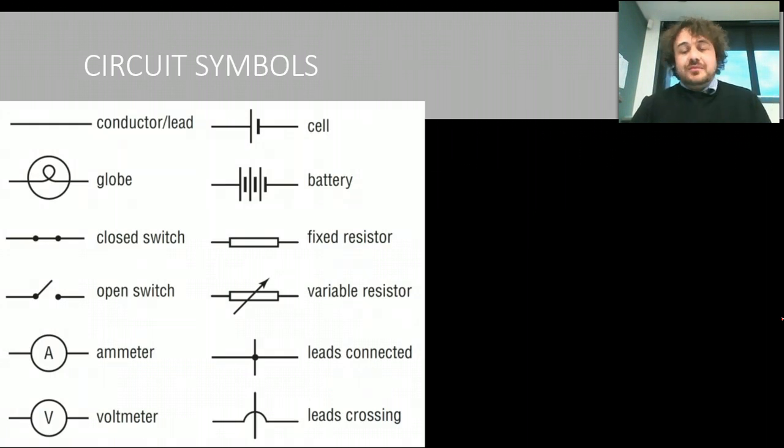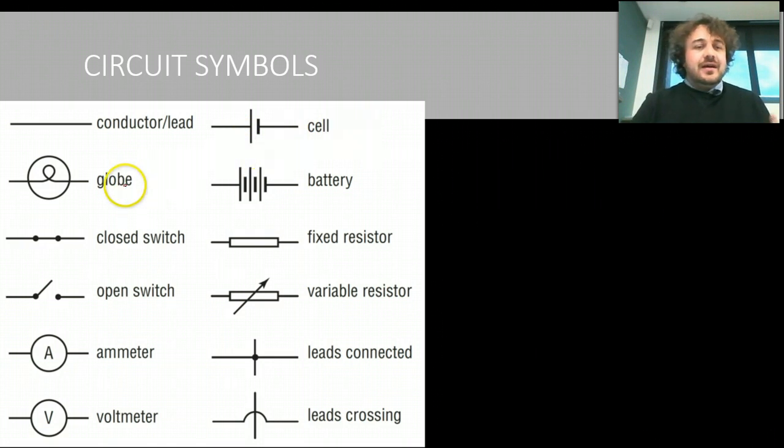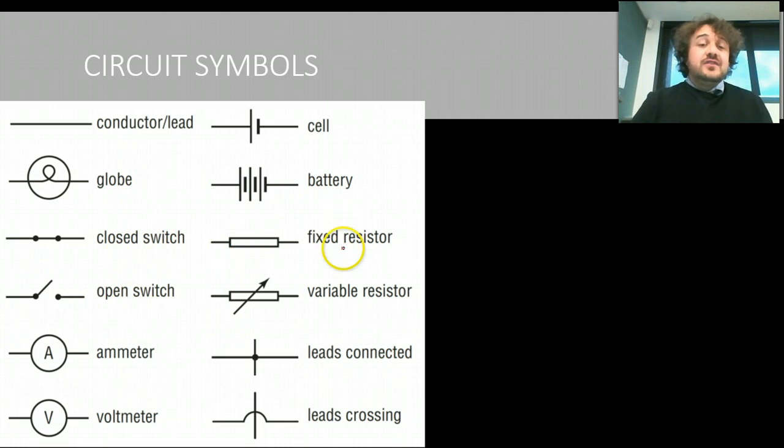These are your circuit symbols. Now you need to draw these in a table and know them, basically. So you've got your conductor or lead, your cell, battery, cell—you want to call that a transformer or power pack. Transformer is the right word. There's your globe, a closed switch or an open switch, a fixed resistor, a variable resistor, and that's a resistor that you can change. We'll see these as we come on, don't stress.